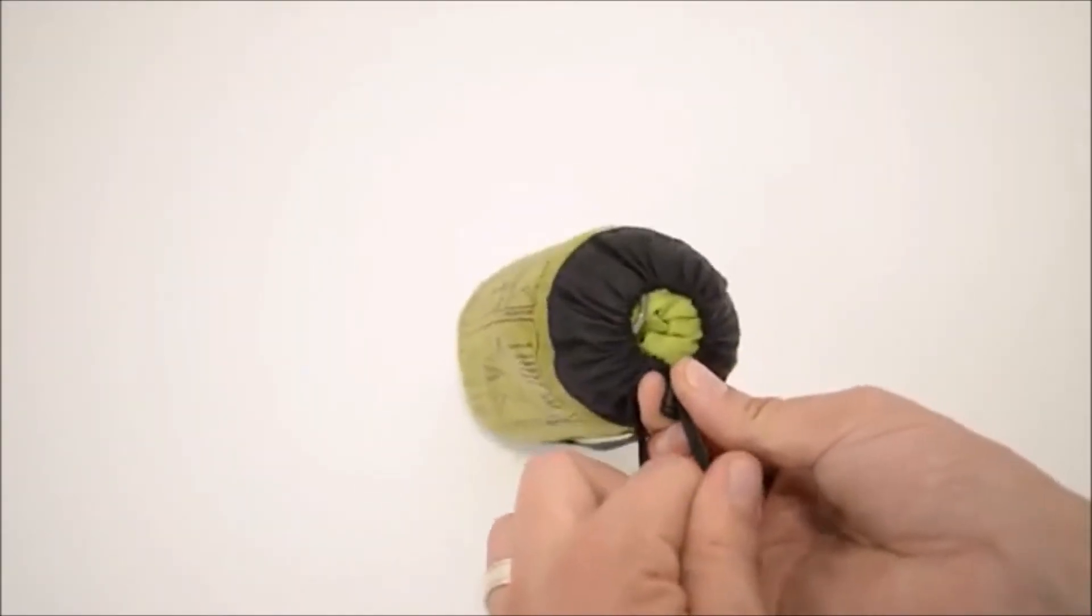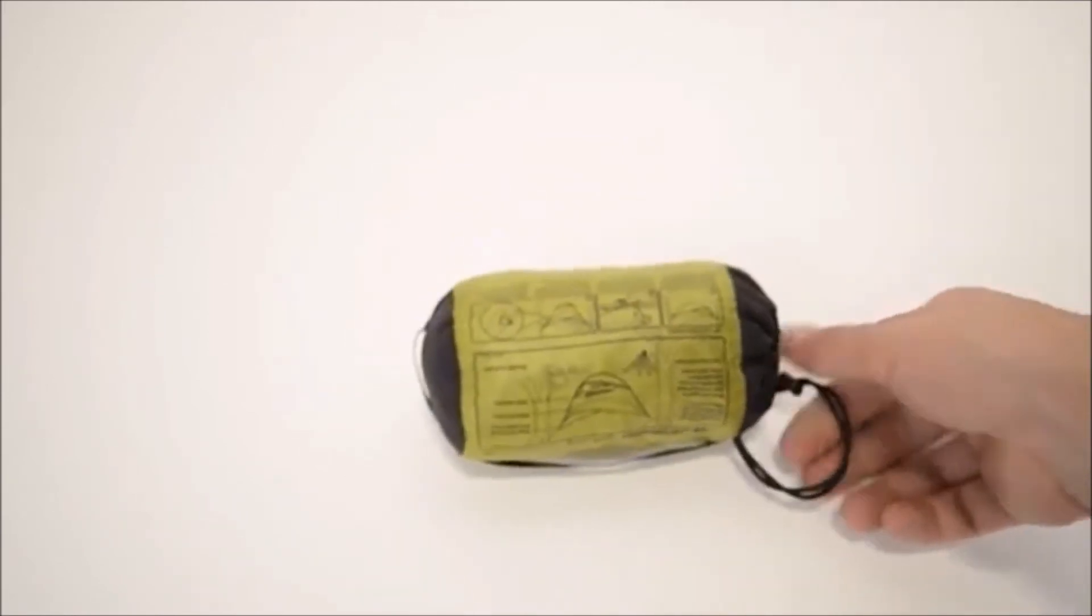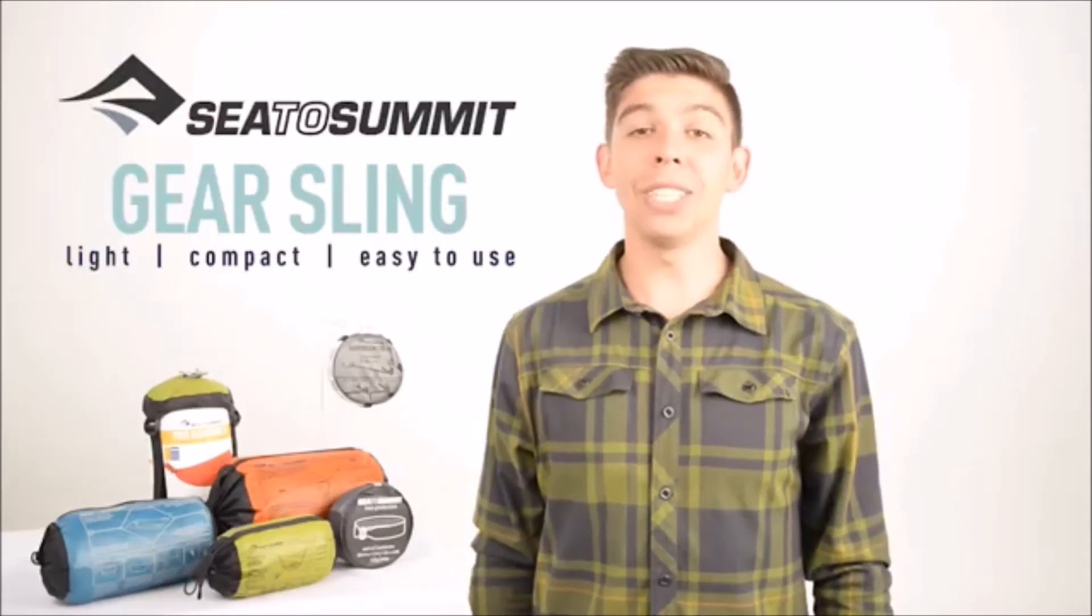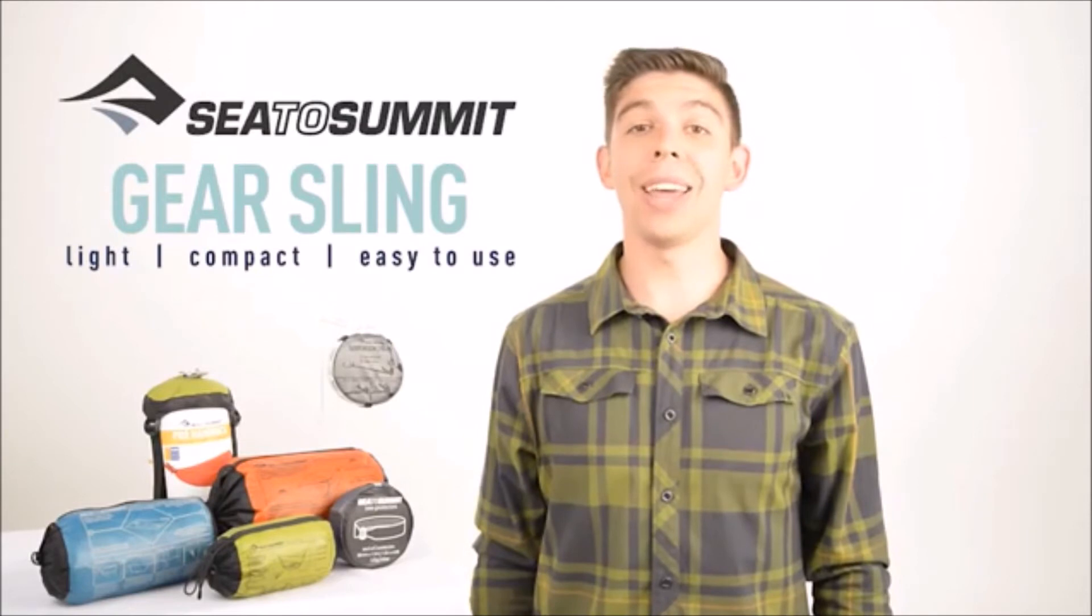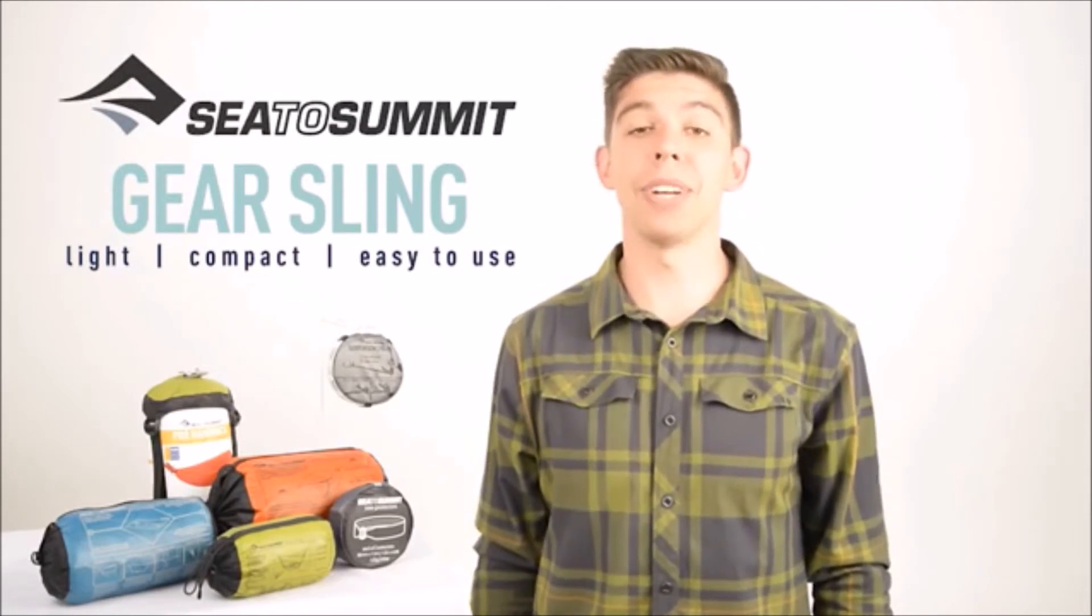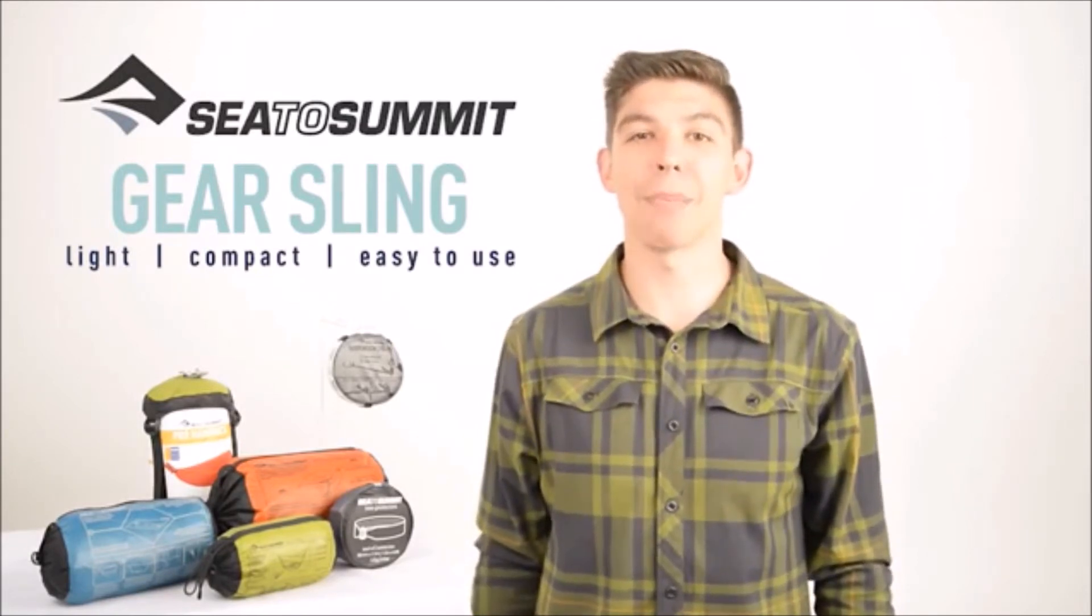It includes a compact UltraSeal Stuff Sack for quick pack down and ease of packing. Weighing in at 165g, this tiny yet thoughtful accessory adds comfort and increases functionality to any hammock camper's setup.